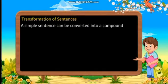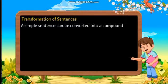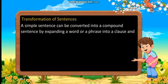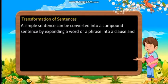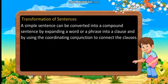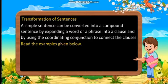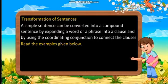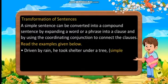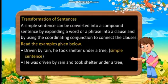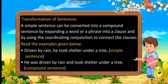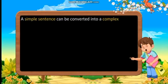Transformation of sentences. A simple sentence can be converted into a compound sentence by expanding a word or a phrase into a clause and by using the coordinating conjunction to connect the clauses. Read the examples. 'Driven by rain, he took shelter under a tree.' — Simple sentence. 'He was driven by rain and took shelter under a tree.' — Compound sentence.